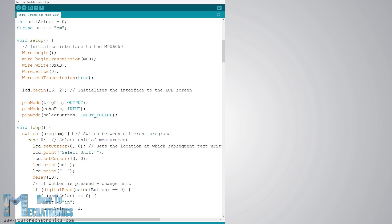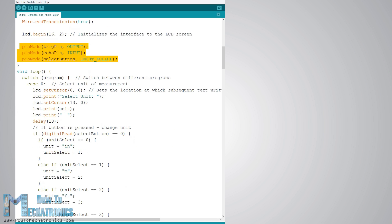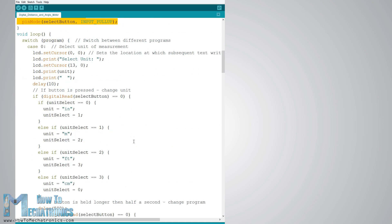In the setup section we need to initialize both the I2C interface of the accelerometer and the liquid crystal display, as well as define the pin modes for the ultrasonic sensor trigger and echo pins and the control button pin. In the main loop section we have switch statements through which we can toggle between the different programs of the device.